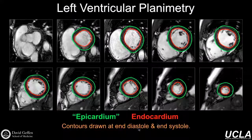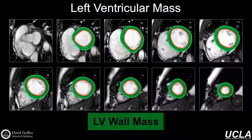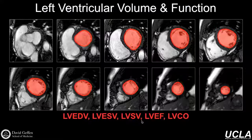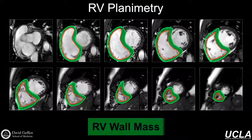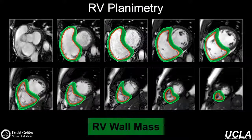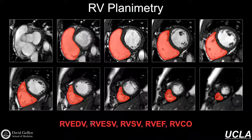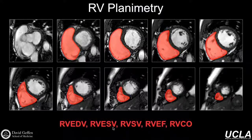We draw epicardial and endocardial contours both at end-diastole and end-systole to get information needed to evaluate global LV function. We can get things like LV wall mass, end-diastolic volumes, systolic volumes, stroke volumes, and cardiac output — but the most frequently measured thing is ejection fraction, done by planimetry. We can do the same for the RV by drawing another set of contours, either on the conventional short axis stack or potentially other views which may improve accuracy and precision for RV-focused evaluations.